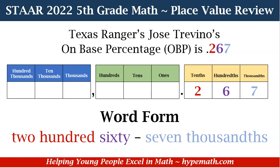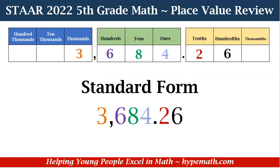For our second example, the standard form is 3,684.26. When we see that decimal point we say 'and,' which signifies that decimals come after it, so we read this as three thousand six hundred eighty-four and 26 hundredths. On the place value chart: 3 is in the thousands place, 6 in the hundreds, 8 in the tens, 4 in the ones, 2 in the tenths, and 6 in the hundredths place.